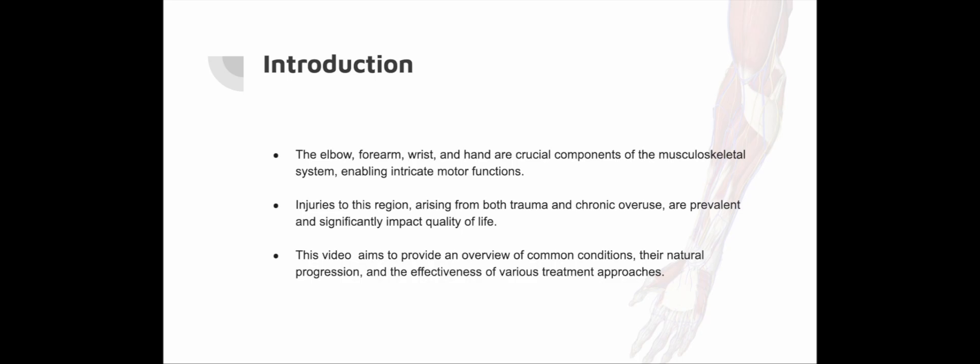Introduction: The elbow, forearm, wrist and hand are those parts of the musculoskeletal system that are essential for human functioning at a higher motor level. Injuries, both as a result of trauma and chronic overload, are relatively common in the area and have a major influence on quality of life. The objective of this video is to provide insight into common conditions, the natural course and the influence and treatment.